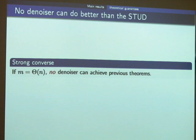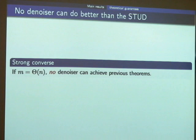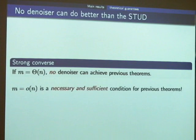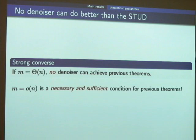There is also a strong converse: if the number of shifts M is linear in n, then no denoiser — not just sliding window, but any denoiser — can attain the previous performance guarantee. So the sublinear condition on the number of shifts is both necessary and sufficient for these theorems to hold. When this condition is met, STUD can attain the performance guarantee. If the source varies too fast with a linear shift rate, no universal denoiser can achieve this.